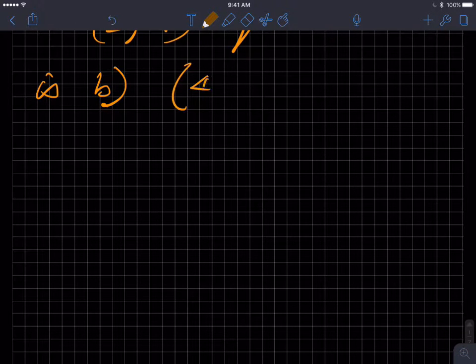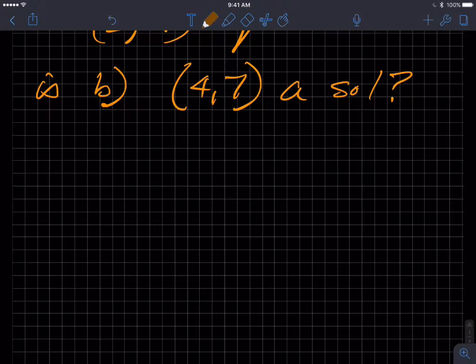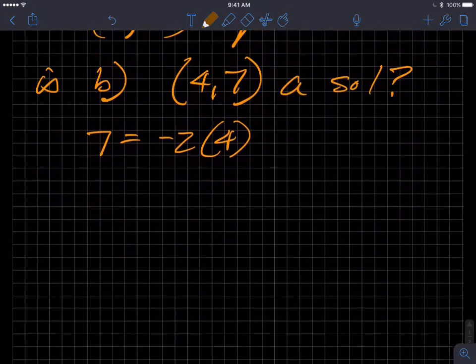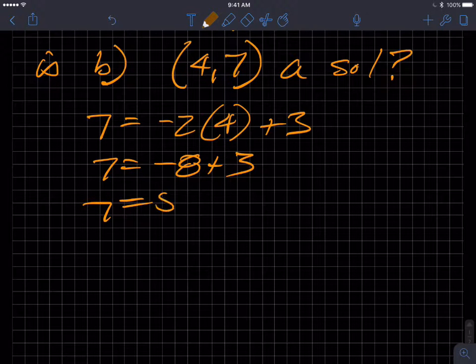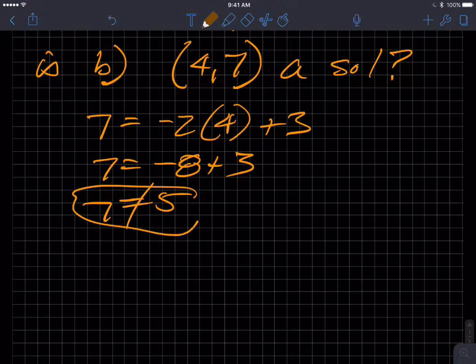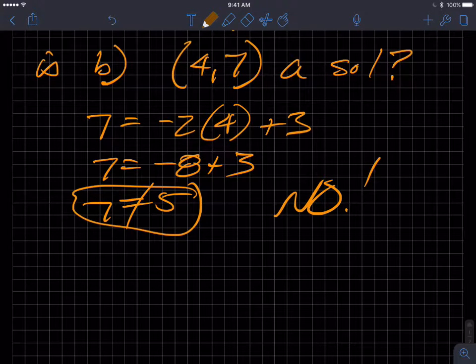And I'll answer the earlier question: there are more than one solution. Let's ask the same question. Is the point 4 comma 7 a solution? So again, hit pause, figure it out. I'll do it the other way. I'll substitute 7 in and the 4 in. It amounts to the same math. That's 7 equals what, that's plus 3, and see if we get an equation that's a true statement. 7 equals what's that, negative 8 plus 3, and we get 7 equals 5.